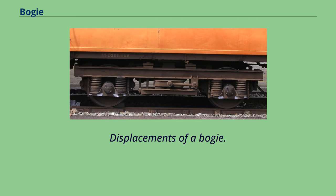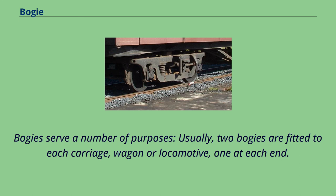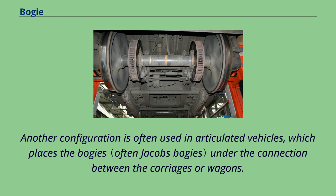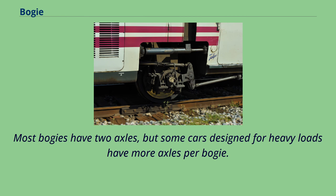Bogeys serve a number of purposes. Usually two bogeys are fitted to each carriage, wagon, or locomotive, one at each end. Another configuration is often used in articulated vehicles, which places the bogeys under the connection between the carriages or wagons. Most bogeys have two axles, but some cars designed for heavy loads have more axles per bogey.